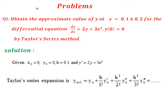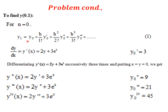Next problem: obtain the approximate value of y at x = 0.1 and x = 0.2 for the differential equation dy/dx = 2y + 3eˣ, with y(0) = 0, using the Taylor series method. Here x₀ = 0, y₀ = 0, x1 = 0.1, x2 = 0.2. The formula for y1 is: y1 = y₀ + h/1!·y₀' + h²/2!·y₀'' + ...